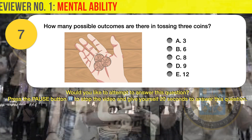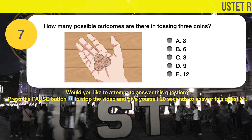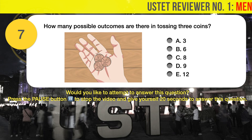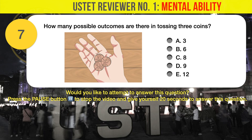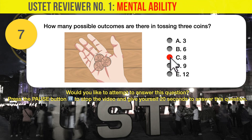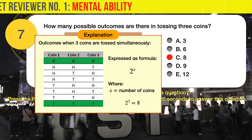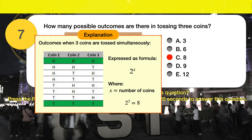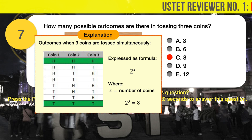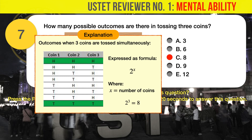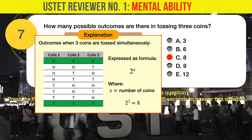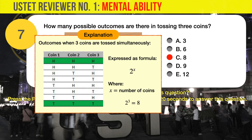Question number 7. How many possible outcomes are there in tossing 3 coins? A. 3, B. 6, C. 8, D. 9, E. 12. The correct answer is C. When 3 coins are tossed simultaneously, the possible outcomes are: 1. Head-Head-Head, 2. Head-Head-Tail, 3. Head-Tail-Head, 4. Head-Tail-Tail, 5. Tail-Head-Head, 6. Tail-Head-Tail, 7. Tail-Tail-Head, 8. Tail-Tail-Tail.